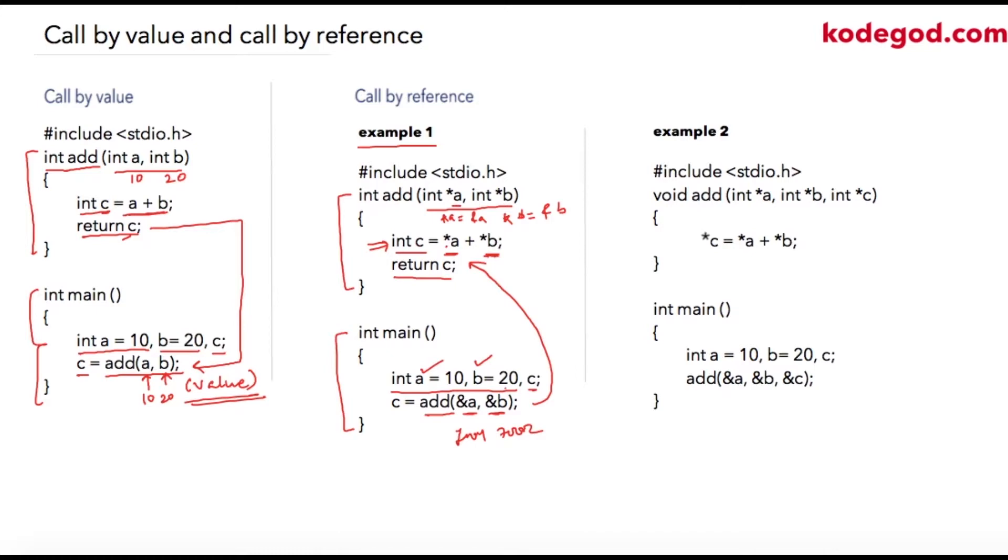It is important to note that this a is integer and this int star a is integer pointer. But then what is advantage of using call by reference?